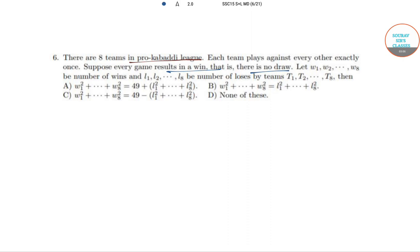So here we can see that w_i plus l_i, for 8 teams, w_i plus l_i has to be 7 because one team winning and losing one part will be not. Therefore, for all i.